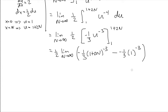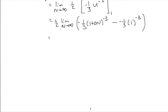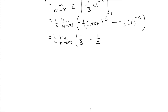Now I just have to clean it up a little bit and take my limit. This 1 to the power of negative 3 is just 1, and minus negative 1/3 becomes positive 1/3. So this term here just becomes 1/3, and then I have minus 1/3 times (1 plus 2n) to the power of negative 3, which I can write as 1 over (1 plus 2n) to the power of 3, turning that negative exponent into a positive exponent by putting it on the bottom.